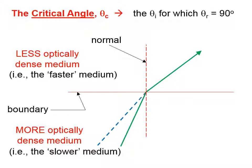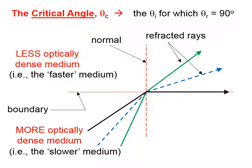If we have a slightly different angle of incidence, indicated by the dashed blue line, it's again going to bend away from the normal. Now you can imagine that as we continue to increase the angle of incidence, there might be some angle, which we call the critical angle, for which the angle of refraction is 90 degrees — namely that the refracted ray goes exactly along the boundary. And that is called the critical angle.